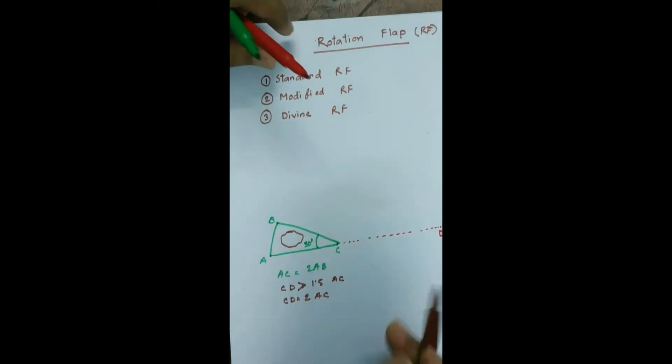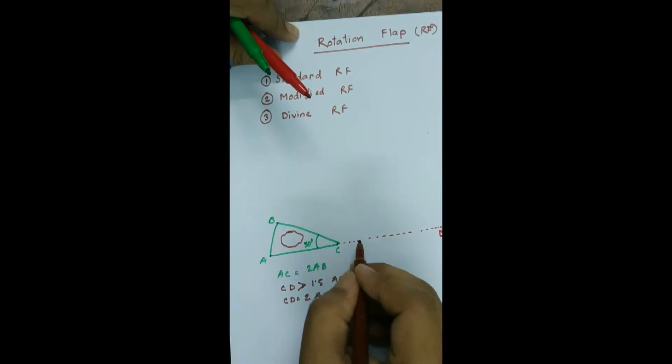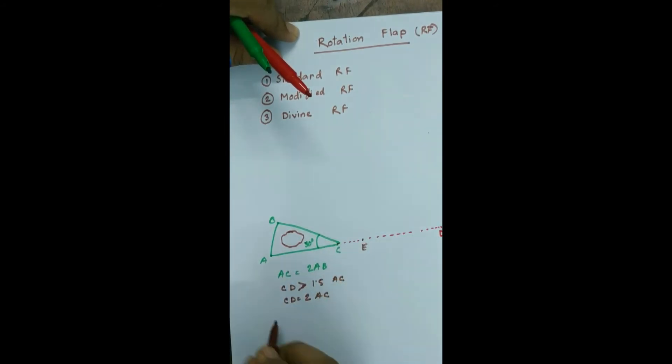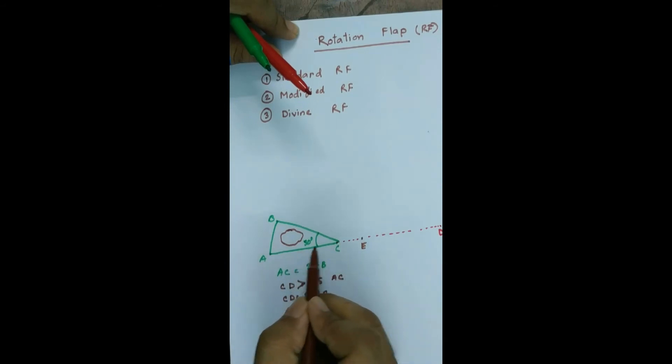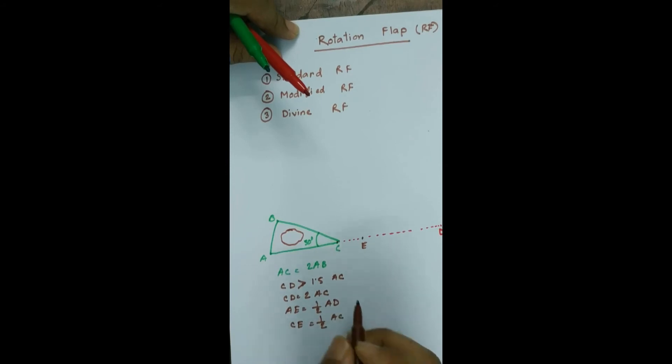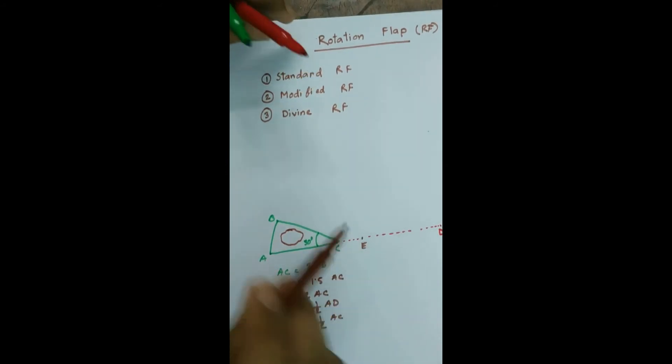Now we decide the middle point of AD that is E. So AE equal to half AD. So there is a shortcut point to sort out this E point. That is, if we extend the AC to half AC, because CE equal to half AC, then we will get this E point.